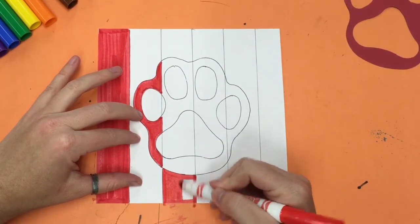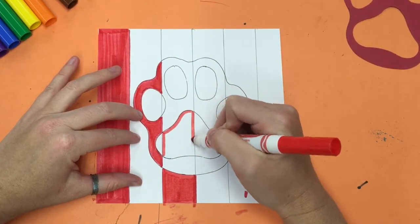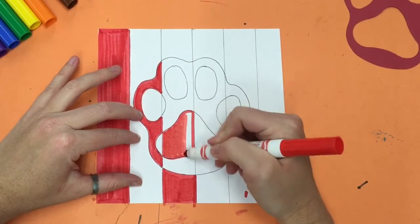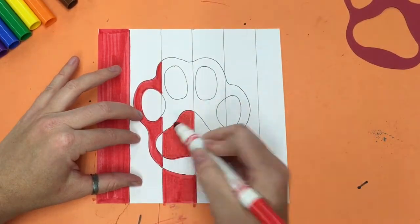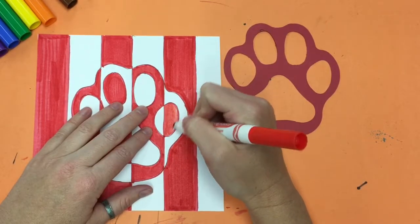That means that in my third stripe, I will not color any of the paw print shape. I'm going to continue coloring stripe, shape, stripe, shape until I get to the end of my paper using the one warm color that I have chosen.